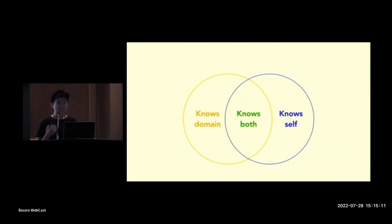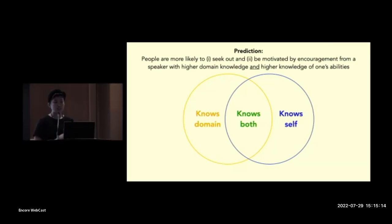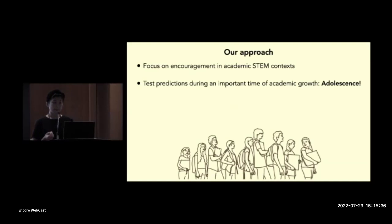Okay, so what we're going to do today is test to what extent each of these matter, and specifically, we predict that people will be most likely to seek out and be motivated by encouragement from a speaker with higher knowledge of the domain and knowledge of one's abilities. Okay, so here's what we did. We focused on encouragement in academic STEM context, and we wanted to test these predictions during a really important period of academic growth, which is adolescence. So middle and high school students have much more autonomy over their decisions in school, but they often experience setbacks and can easily fall behind. And what this means is that this is a really important period where having meaningful motivational feedback may really matter for them.